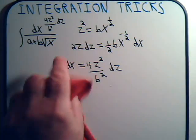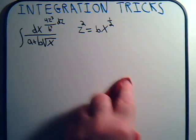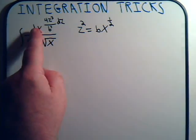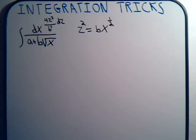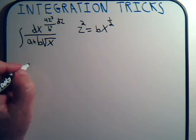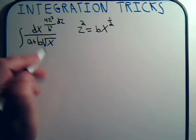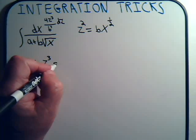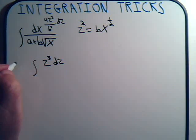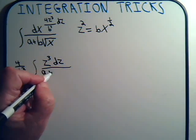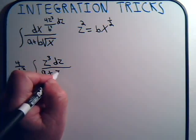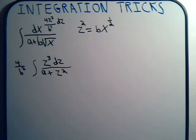Let's make some room. Here's our original substitution, and here is dx. So we rewrite the integral. We're going to have z cubed dz, and 4 over b squared on the outside — these are both constants — divided by a plus z squared. So we've made the substitution and now have this integral to deal with.